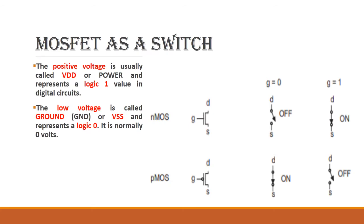An important application of MOSFET is its use as a switch. VDD is the supply voltage and VSS is the ground. For N-MOS: when gate voltage is 0, it is switched off; when gate voltage is 1, it is switched on. For P-MOS: when gate voltage is 0, it is switched on; when gate voltage is 1, it is switched off. This is the working principle of the MOSFET switch.